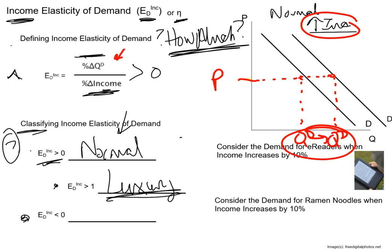Alternatively, if the income elasticity of demand is negative — which it can be because we're not taking the absolute value — it means the percentage changes in the numerator and denominator are opposite signs. They're moving in opposite directions: if income goes up, demand and quantity demanded go down. That's exactly how we define inferior goods. Whether the income elasticity is positive or negative tells us if a good is normal or inferior, and the size communicates how much of an impact income has on quantity demanded.